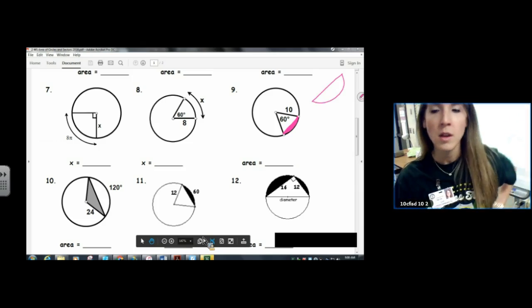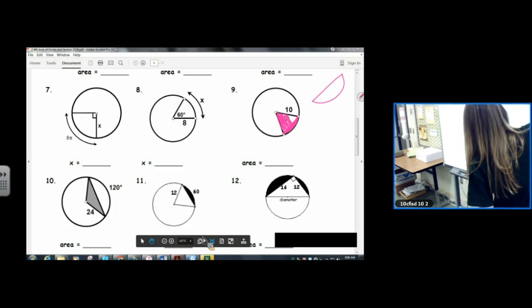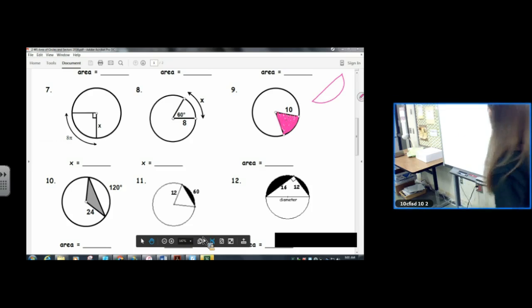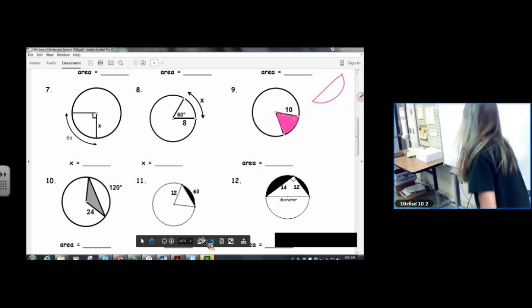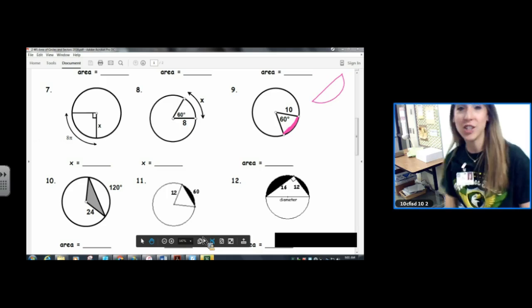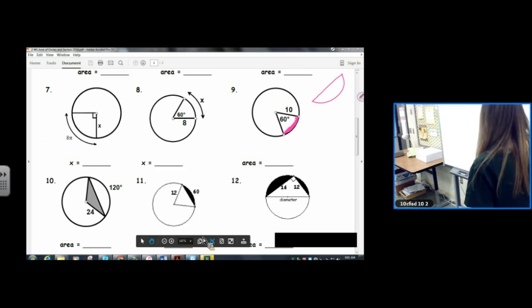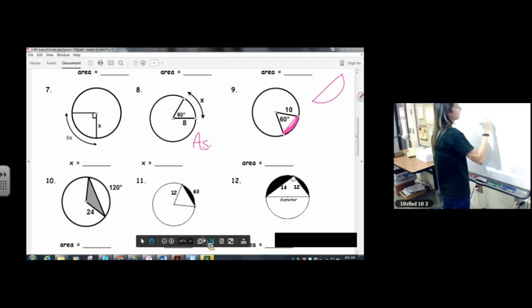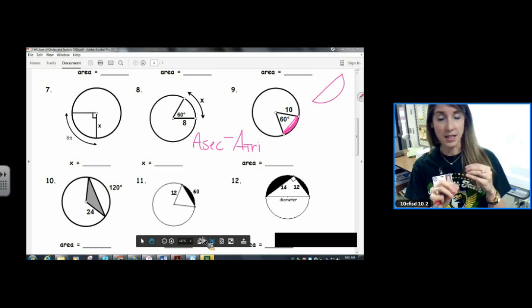The way that we get this is kind of sneaky. We first find the area of a sector—we know how to do that, we have a whole lesson over it. Then we subtract something out. What is that something that we subtract from the sector? What is that shape? It's a triangle, okay. So we are going to do A sec minus A tri. That's kind of fun: A sec minus A tri. So we're gonna find the area of the sector and we're gonna take away the white space—we're gonna take away the area of the triangle.